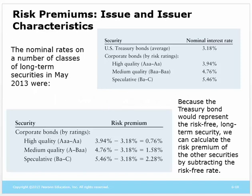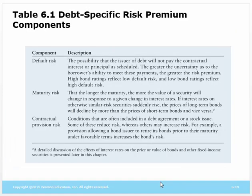Looking at some results: United States Treasury bonds are averaging about 3.18%. Corporate bonds obviously all have higher returns, and the riskier the bonds — as you go down the rating scale — you get higher and higher returns because of higher and higher risk. The risk premiums are established as anything over the risk-free rate. The three primary risk premiums are: default risk, maturity risk, and contractual provisions — conditions that the borrower has to meet. All of these characteristics filter into the end yield that investors will get when they invest in bonds.